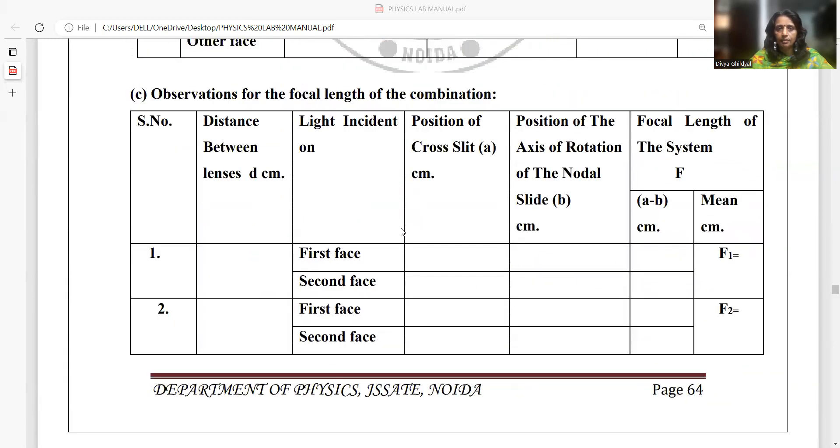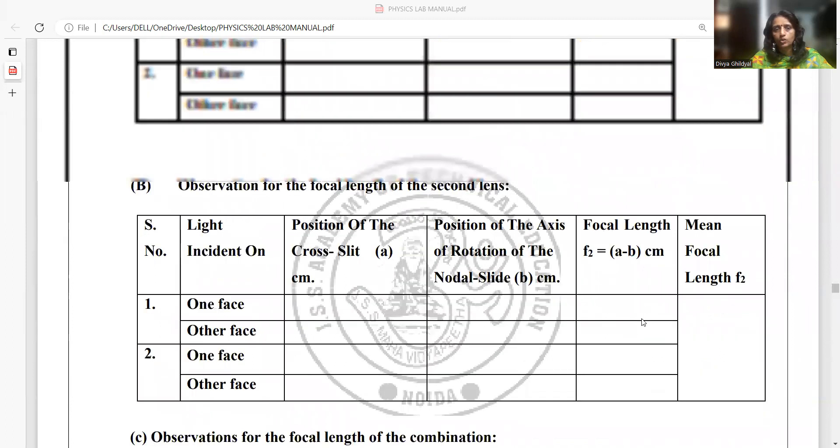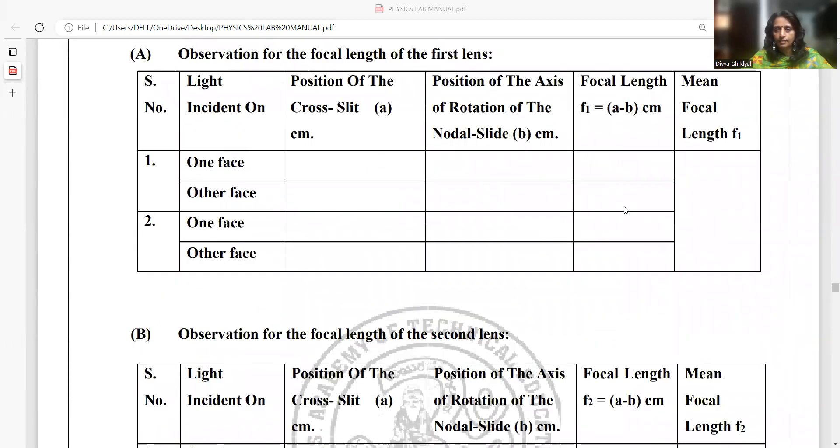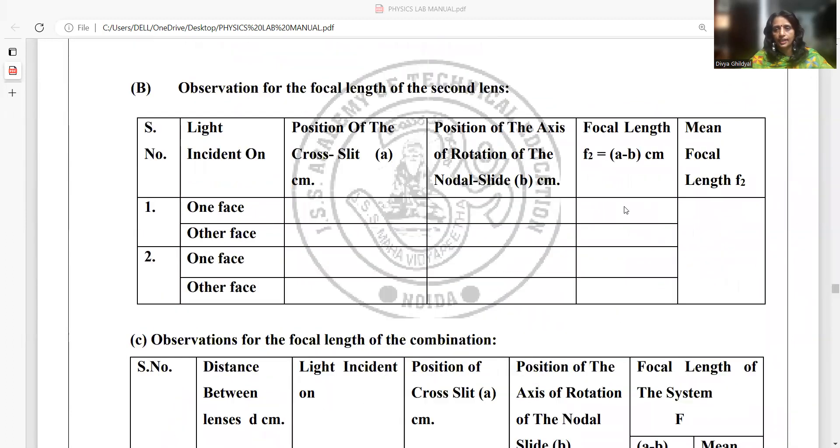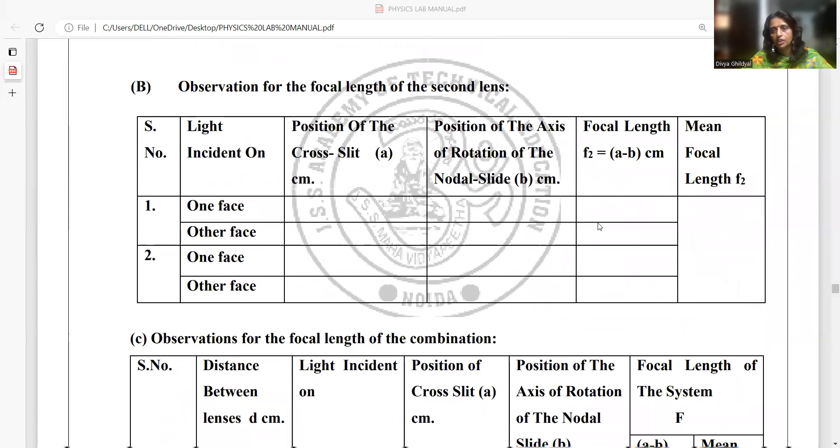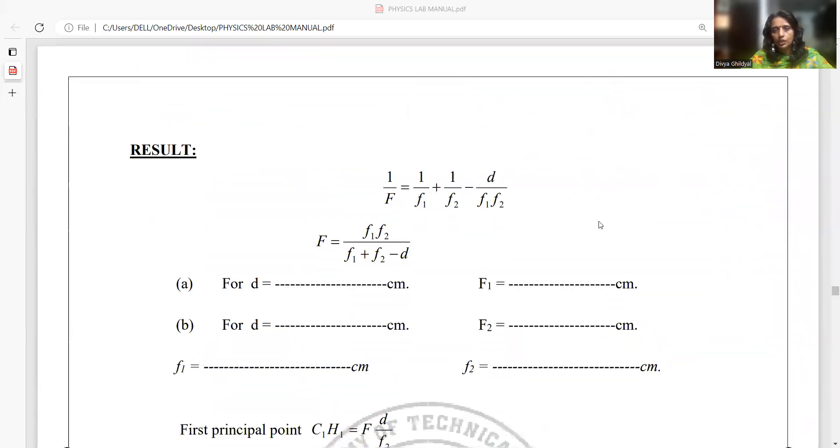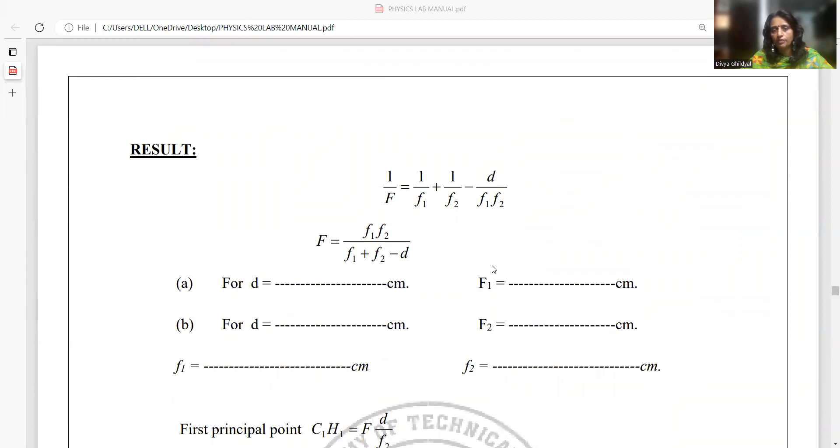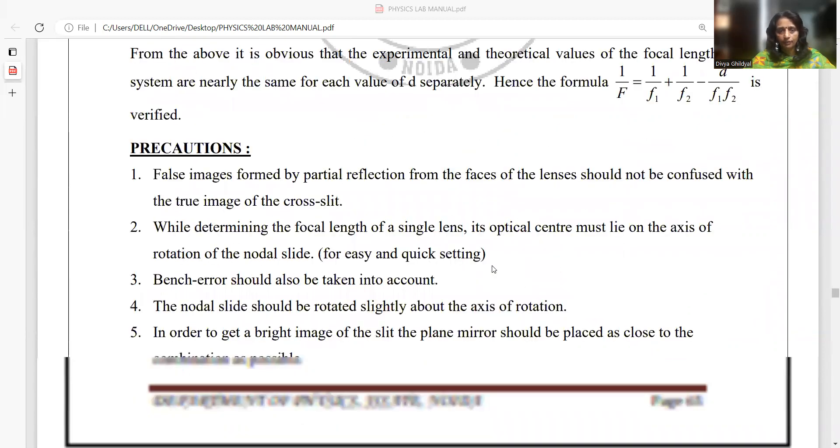In the third table, we will put both the lenses on our nodal slide setup and find the combined focal length. Suppose first lens focal length comes as 30 cm, and the second comes as 50 cm. In the third table, you can even find the combined focal length from this formula, which will be 1/f1 + 1/f2 - d/f1f2.